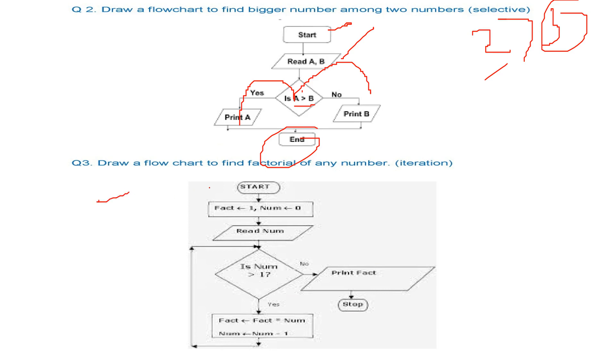Then we have another flowchart for factorial. Now factorial for example, we have to find factorial 3. We start with say factorial n. So we start with n.